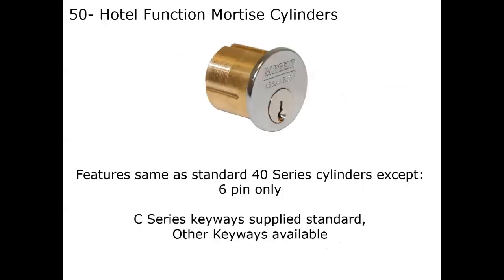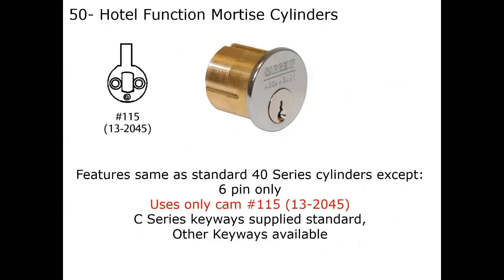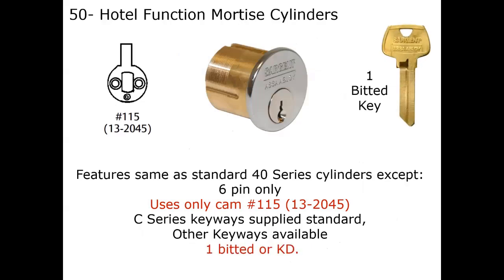The unique hotel function cylinder is used most commonly today in staff bathrooms in schools, where the bathroom is always locked and it's a single-use bathroom, and it's cross-keyed so all the teachers' keys can open this bathroom door. They go in and throw the deadbolt for privacy. In the event that someone gets incapacitated within that bathroom, there's a unique key called an emergency key that would override the deadbolt and gain access. Originally called the hotel function mortise cylinder, used in hotel locks years ago, but very often used in single-use bathrooms in schools today.